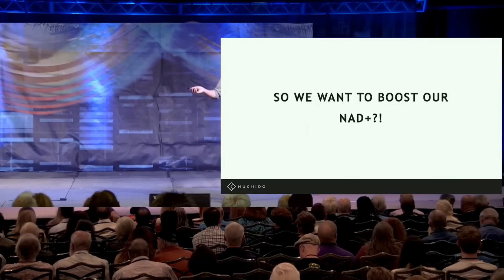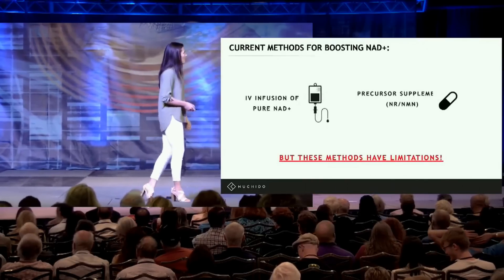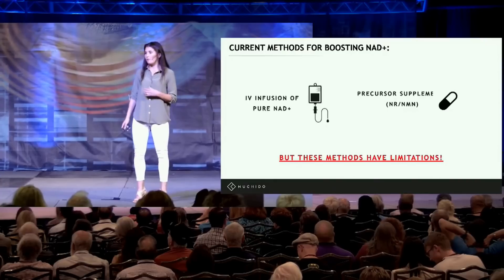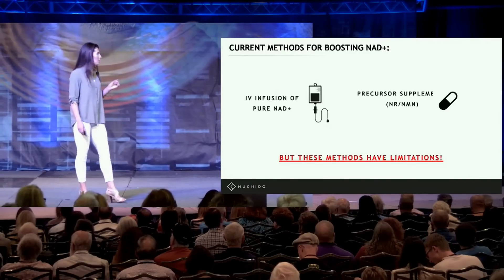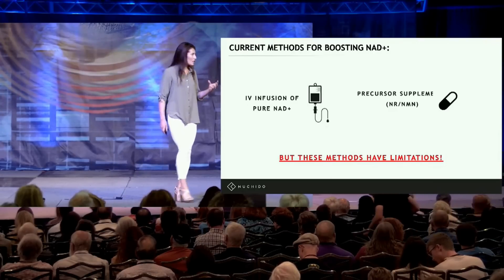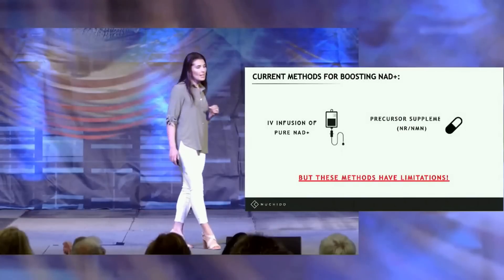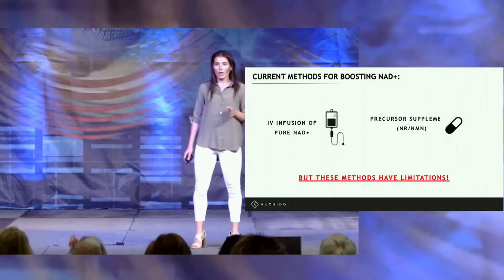So how do we boost our NAD? One of the main ways is IV infusions of pure NAD. Another way is to supplement with precursors — the raw materials cells need to make NAD — and the common ones you'll know are nicotinamide riboside (NR) and NMN. But the problem is these methods have limitations; they are quite inefficient ways of boosting NAD, and probably won't get your levels back up to rejuvenation levels.